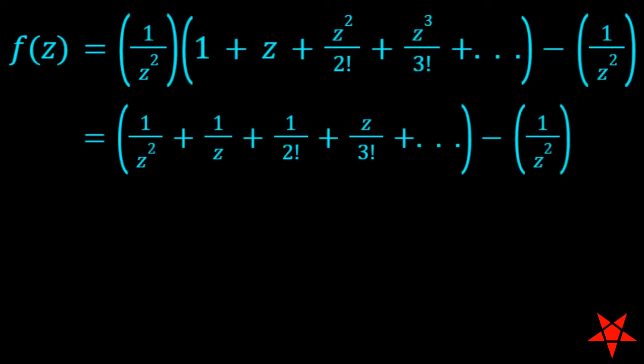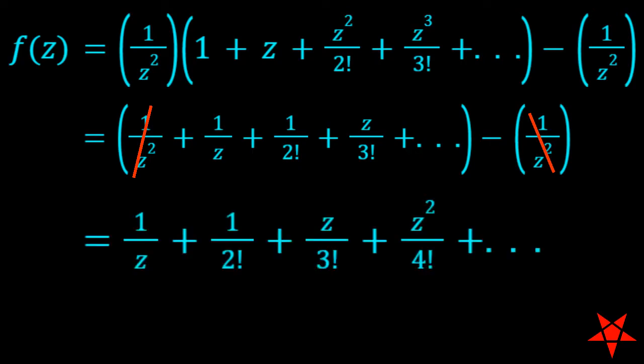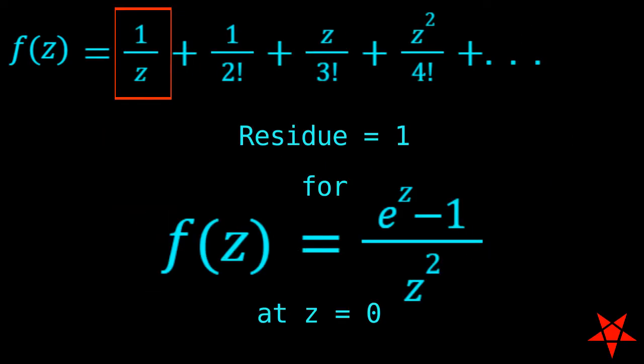Distributing 1 over z squared across the terms in the Taylor series, we see that minus 1 over z squared cancels with positive 1 over z squared, and what is left is a Laurent series centered at z equals 0. We observe that the 1 over z term has a coefficient of 1, and thus we have the residue for e to the z minus 1 over z squared at z equals 0.